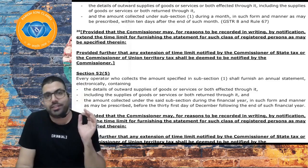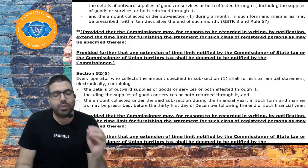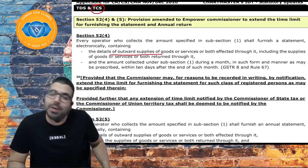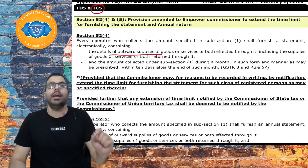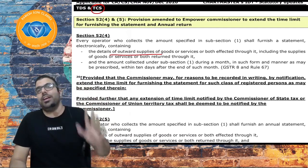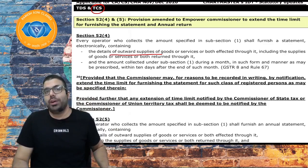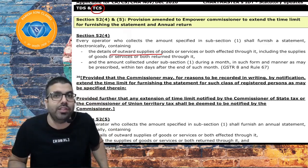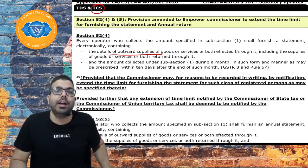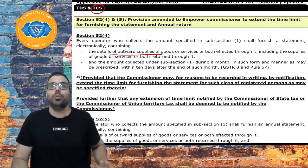GSTR-8 is a statement of outward supplies to be furnished by a TCS collector — an e-commerce operator who is required to collect TCS. He has to submit one monthly statement which is GSTR-8, and one annual statement which is GSTR-9B.